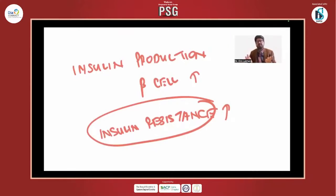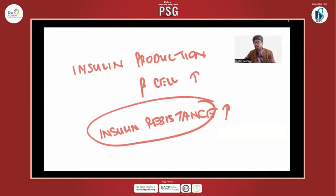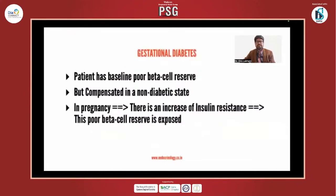There is an imbalance between insulin production and insulin resistance. In type 1 diabetes, there is very little insulin production, so there is this imbalance — even a slight tip of the balance of insulin resistance triggers the onset of type 1 diabetes. Whereas in type 2 diabetes, insulin resistance is the main pathogenesis, leading to increased insulin resistance; the body keeps compensating until it cannot compensate any further, leading to hyperglycemia. The same thing occurs in gestational diabetes — the patient generally has poor beta cell reserve to start with, compensated in a non-diabetic or non-pregnant state, but in pregnancy there is increased insulin resistance, and the poor beta cell reserve is exposed.